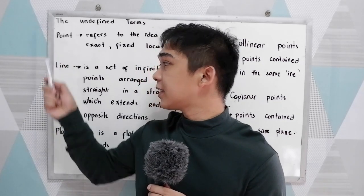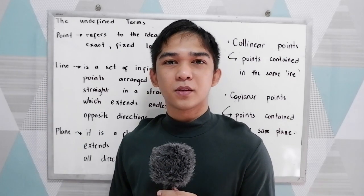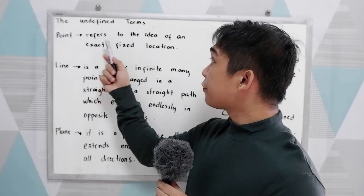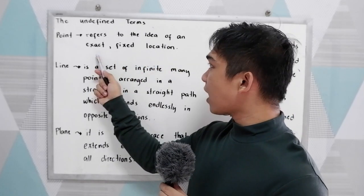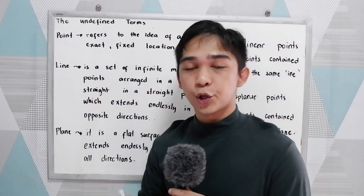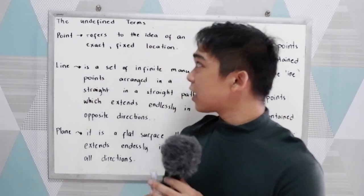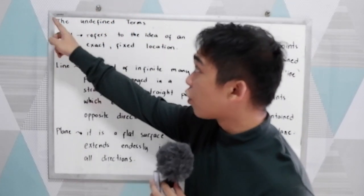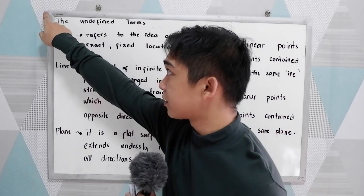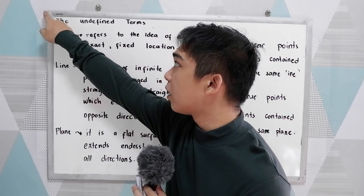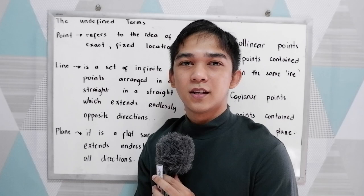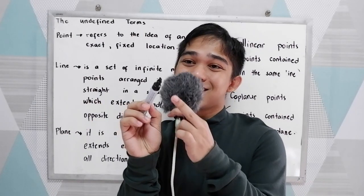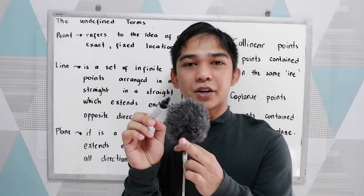We have the point, line, and the plane. Point refers to the idea of an exact fixed location. So let's say, our example, we have the corner of this board. So that is an example of a point, a star in the sky, or a tip, tip of this marker.